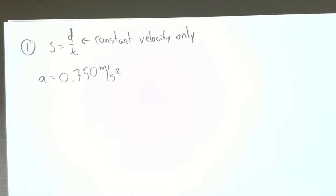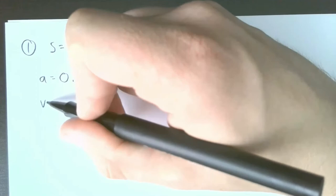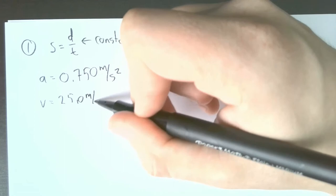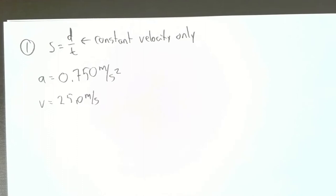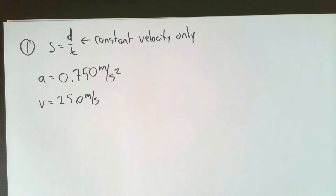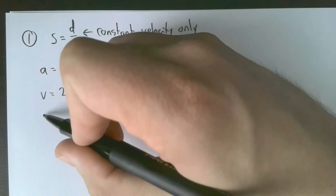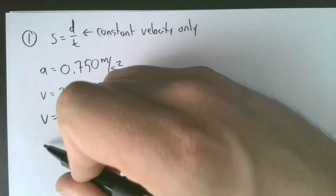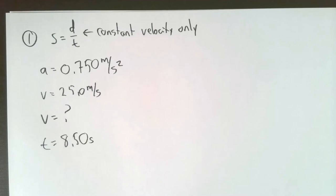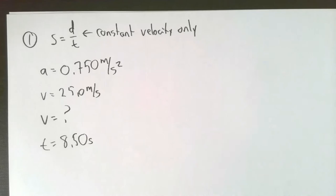They say acceleration is 0.750 meters per second squared, so that indicates we're using one of our other four equations. Let's see what else is told. They say it's traveling east at 25.0 meters per second - I know that's velocity because it is written in meters per second. Let's say for now that we don't know what type of velocity. Then they say find velocity after 8.50 seconds, so we're also looking for velocity, and time is given, 8.50 seconds.